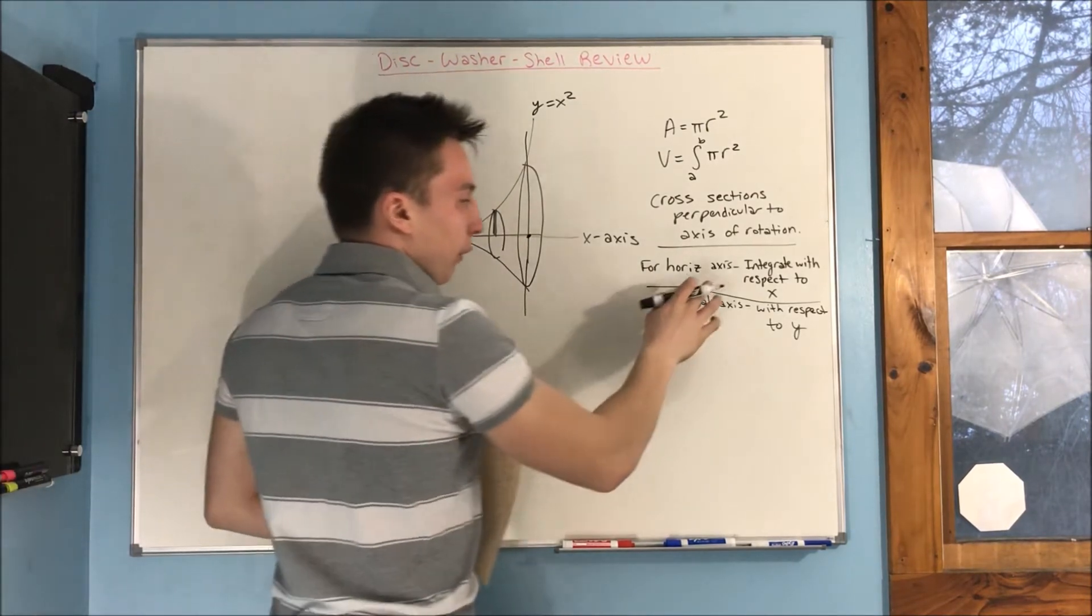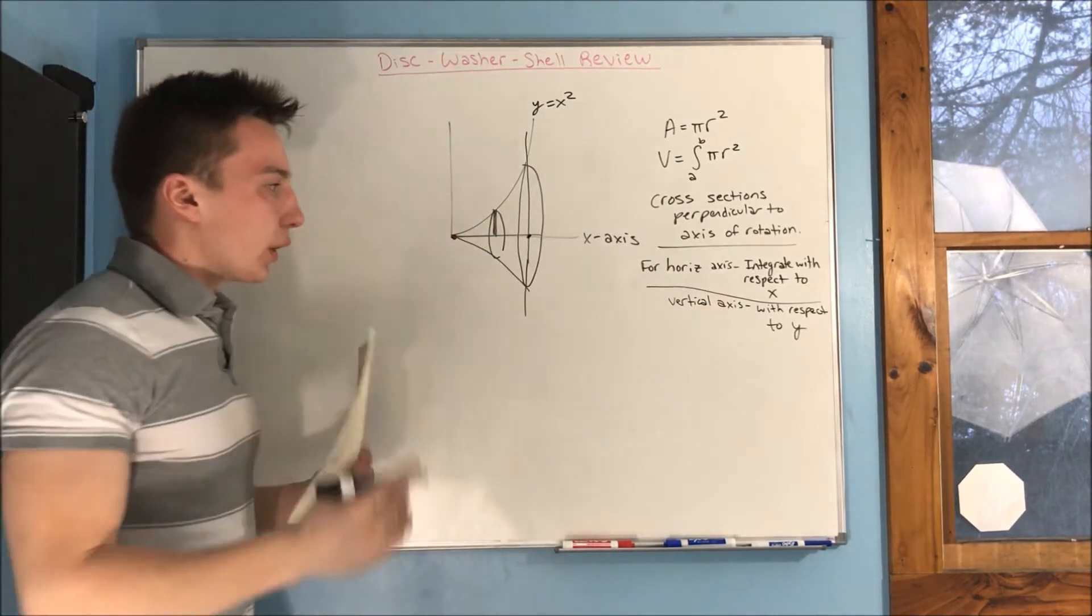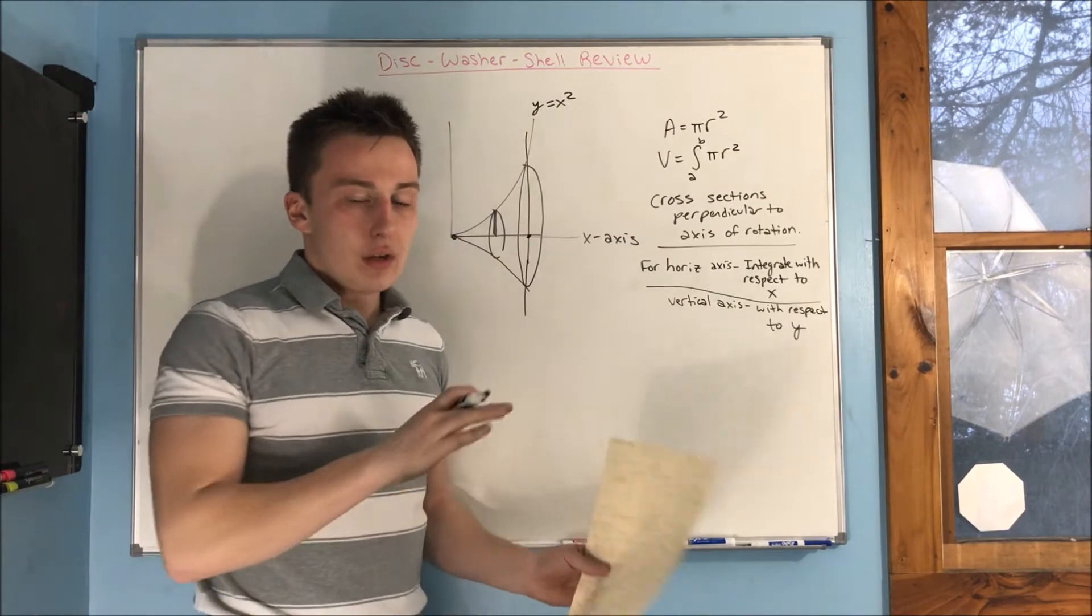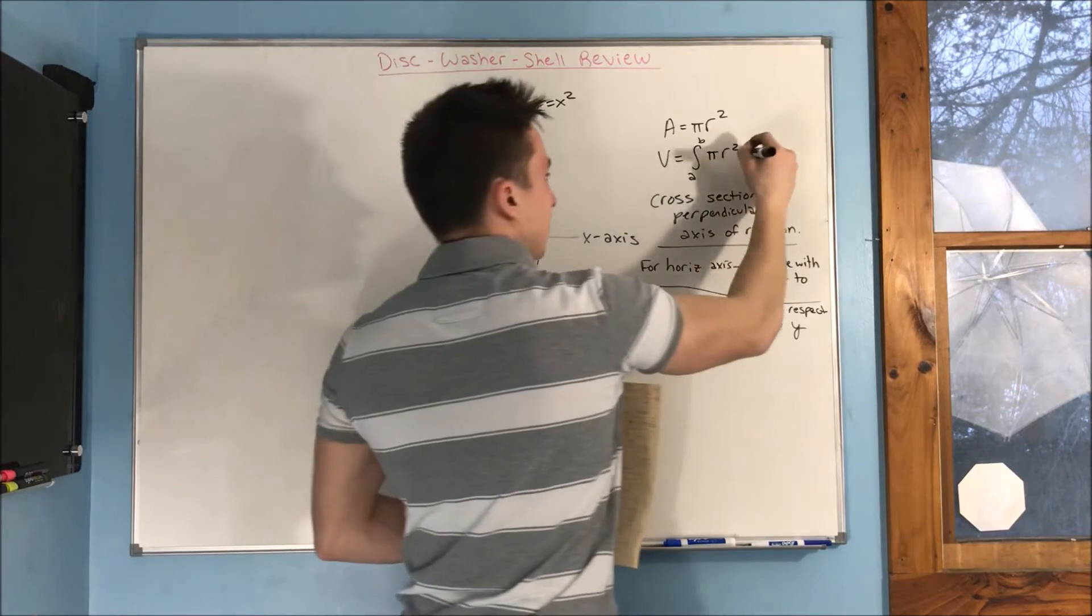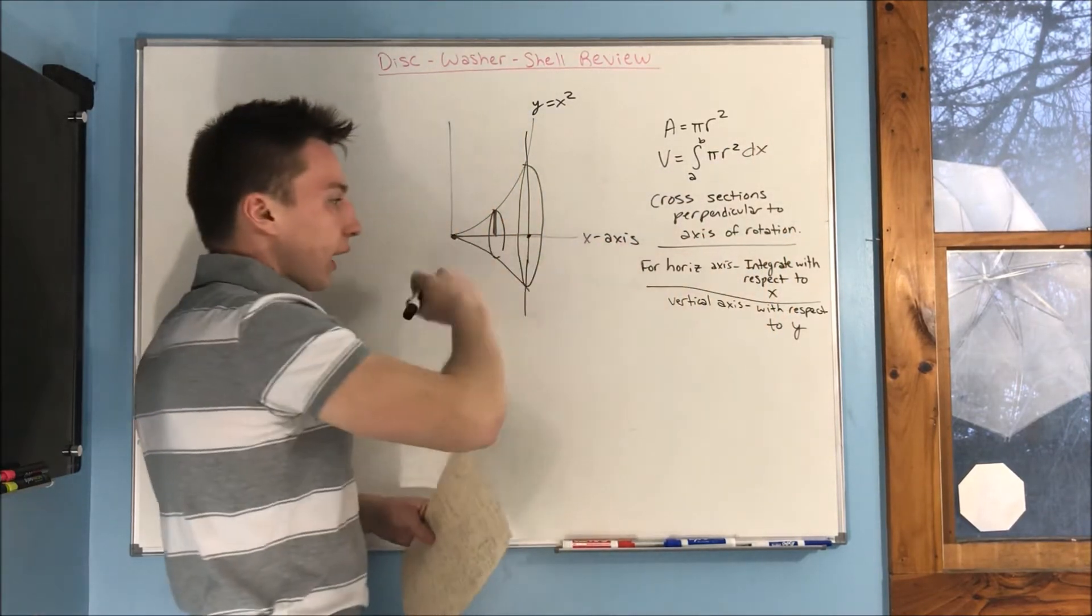Now, we also know that for a horizontal axis, we're going to be integrating with respect to y. So we're going to have an integral with something in terms of x. We're going to get a dx over here for a horizontal line.